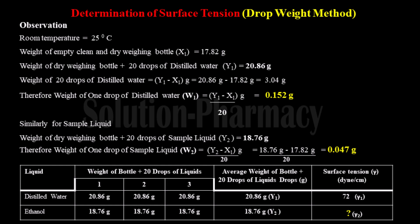So: 18.76 minus 17.82, divided by 20, gives 0.047 grams. The weight of one drop of ethanol, denoted by w2, is 0.047 grams. We have now prepared the observation table, with the first column listing the liquids — distilled water and ethanol, the sample liquid.